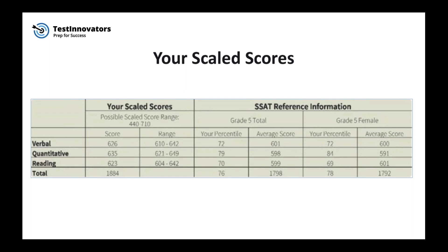This scaled score is the result of a transformation applied to the raw score. The raw score is generated from one point for each right answer, zero points for each unanswered question, and then subtracting a quarter of a point for each wrong answer. The purpose of scaling the raw score is to report the scores for every test taker on a consistent scale. No single test score provides a perfectly accurate estimate of your proficiency, so there's also a personal score range provided to emphasize the possibility of score differences if you took the SSAT again.